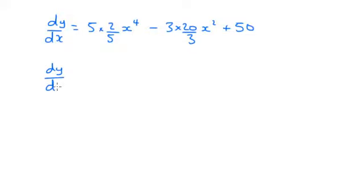So if we just simplify my answer now, 5 times 2 over 5, hopefully you know that they're going to cancel. So that will give us 2x to the power of 4.